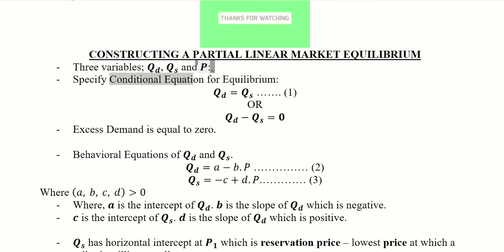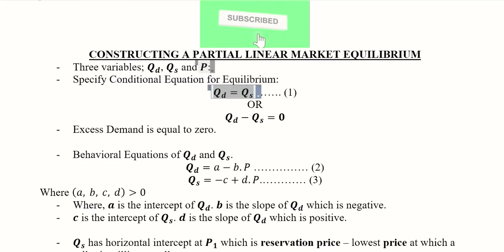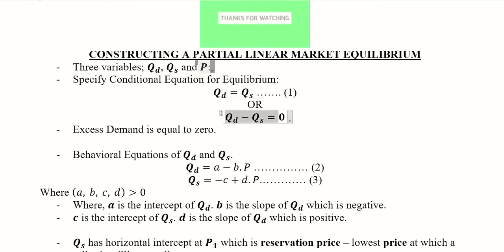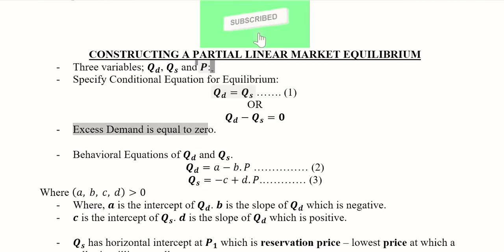We start with the conditional equation for equilibrium. This is the conditional equation for equilibrium where qd should be equal to qs. We can rewrite it in a way which expresses the excess demand equal to zero, because there is no excess demand in the situation of equilibrium.